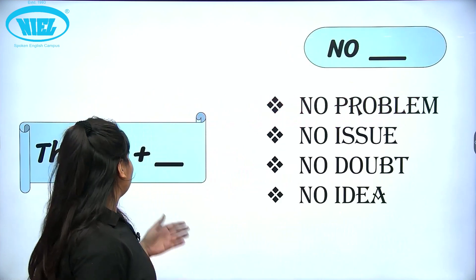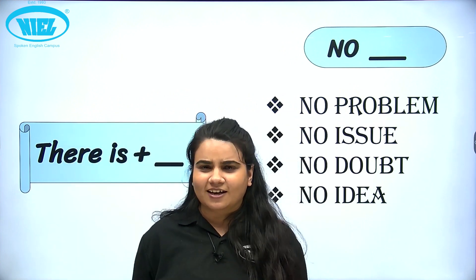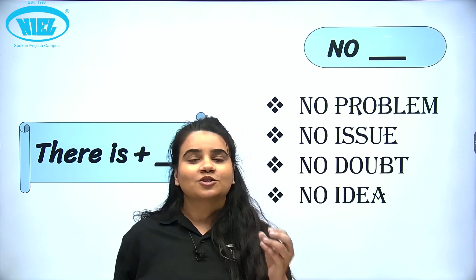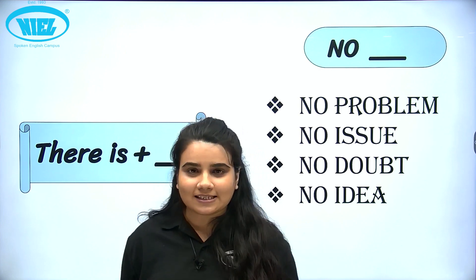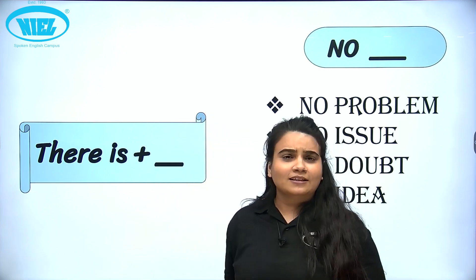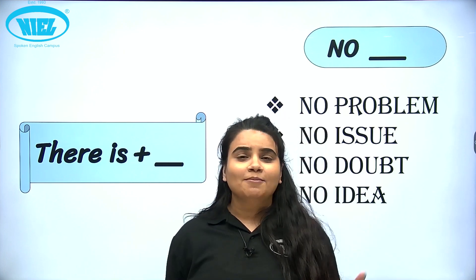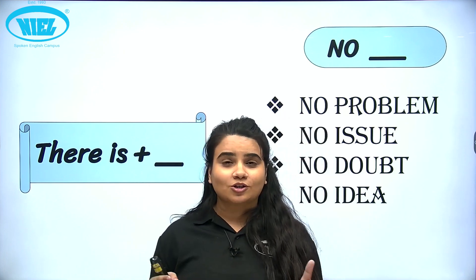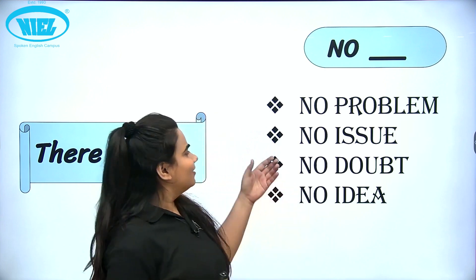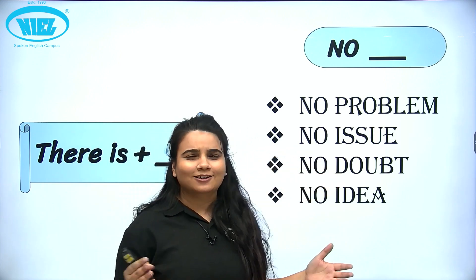The first one is 'there is.' Jab aapko aise kehna hai ki koi problem nahi hai, koi doubt nahi hai, so we usually say: there is no problem, there is no doubt, there is no issue. Ab aap isko short way mein bhi bol sakte hai — you can simply say: no problem, no doubt, or no issue.